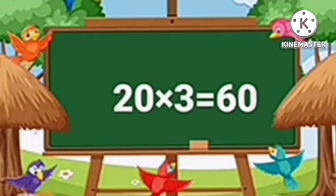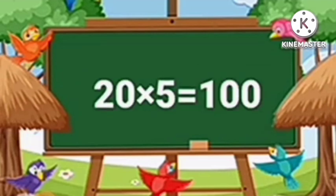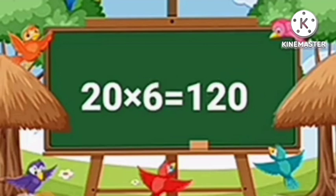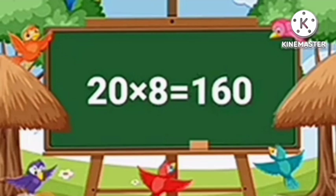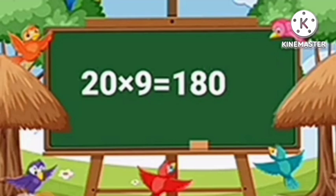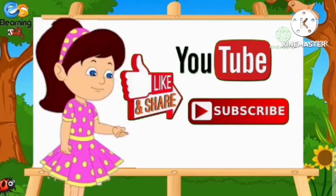Table of Twenty. Twenty ones are twenty. Twenty twos are forty. Twenty threes are sixty. Twenty fours are eighty. Twenty fives are one hundred. Twenty nines are one hundred eighty. Twenty tens are two hundred.